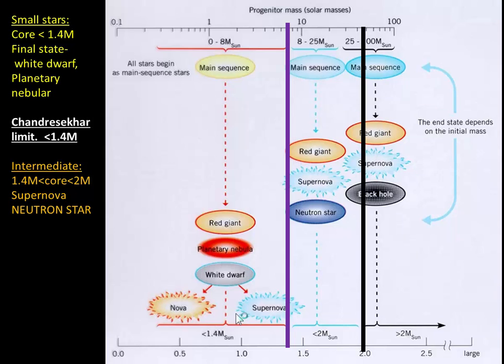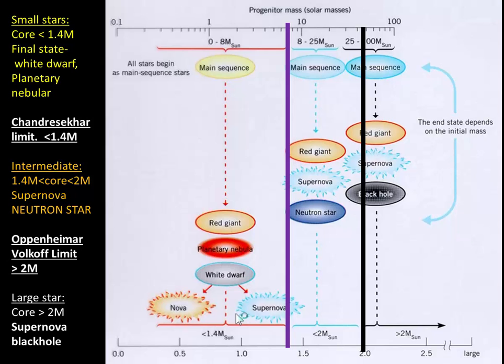But then there's a third limit. If it's greater than 2 solar masses for the core, this is called the Oppenheimer-Volkoff limit, then it will turn into a supernova and end as a black hole.